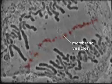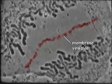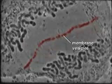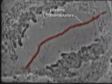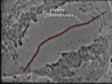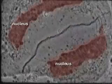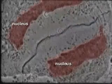After chromosome separation, membrane vesicles line up in the center and fuse with each other to form the new plasma membranes that separate the two daughter cells. At telophase, the chromosomes decondense in the newly formed nuclei.